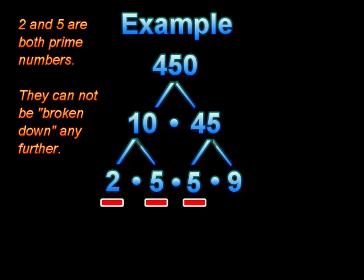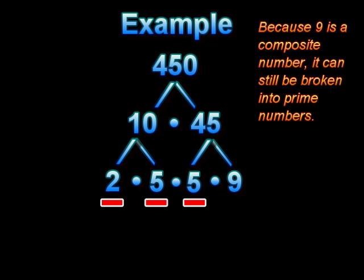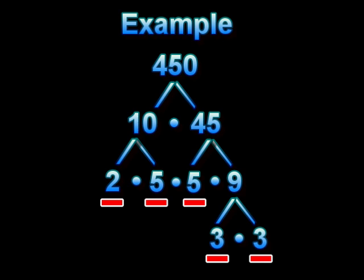Some people think that if the number is odd, it is prime, but that is not true. There are many composite numbers that are odd numbers. 9 can be broken down into 3 times 3. Because 3 is a prime number, we are finished breaking all numbers down into the prime elements.